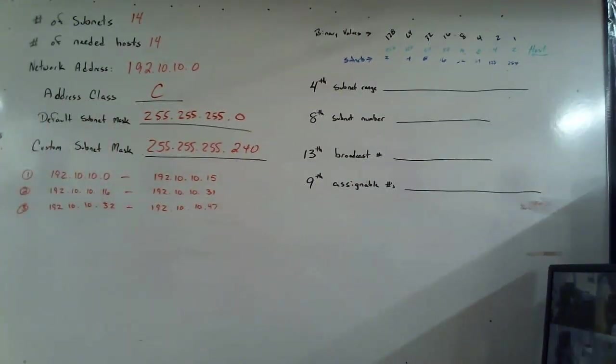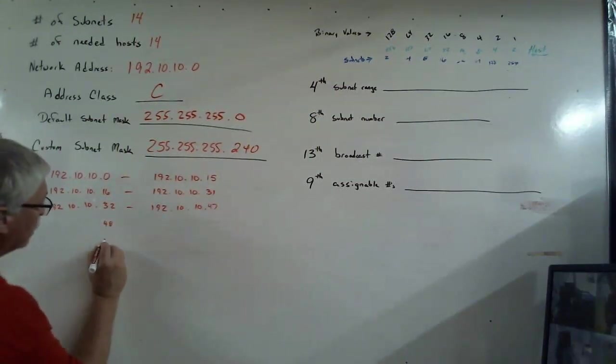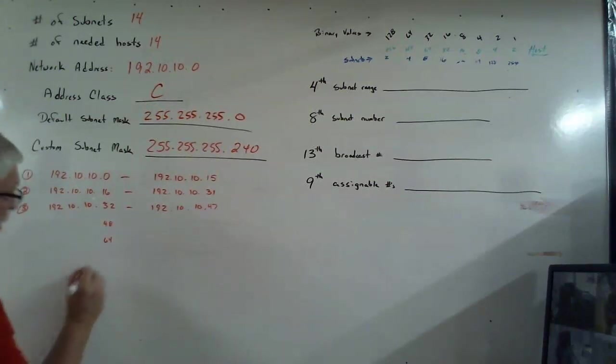Now you notice I kind of had to look there on my answer sheet and there should be an easy way to do this. And I've got a little trick for you. Here's what I suggest you do. If we look at the 192.10.10.0 that was the beginning number. What was the next number? It was 16. If I take and add 16, which is the number of host addresses in each subnet to 0, I get 16. If I add 16 to that, I have 32. If I add 16 to that, I have 48. If I add 16 to that, I have 64. If I add 16 to that, I have 80.